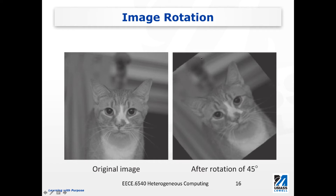The second example is image rotation. We have the opportunity to process different images, and often you want to rotate the image. In this example, we have a very cute cat — its original image is on the left, and on the right we have the rotated image, rotating counterclockwise 45 degrees. This is a good example of the image rotation we're looking at.